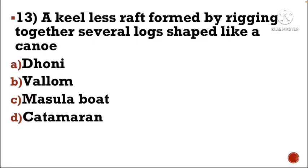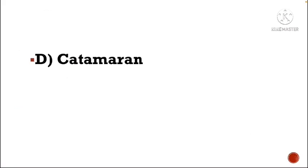Next question: A keel-less raft formed by rigging together several logs shaped like a canoe — Option A: dhoni, Option B: vallam, Option C: masula boat, Option D: catamaran. The correct answer is Option D, catamaran.